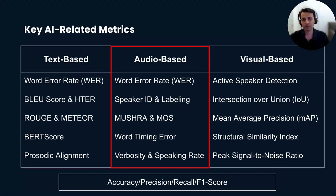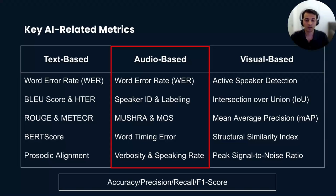Now let's move to audio-based key metrics. We also have Word Error Rate for audio-based products, used in voice recognition systems to measure the rate of errors in transcribing speech to text. Speaker identification and labeling error measures the system's ability to correctly verify the speaker's identity. MUSHRA is a methodology for evaluating the perceived quality of machine-generated audio or voice.